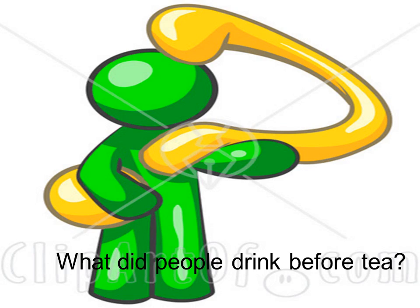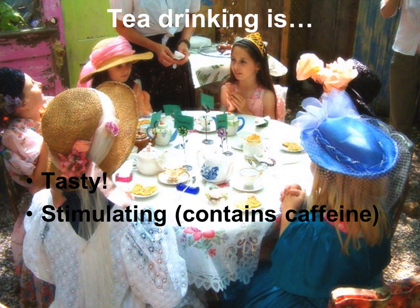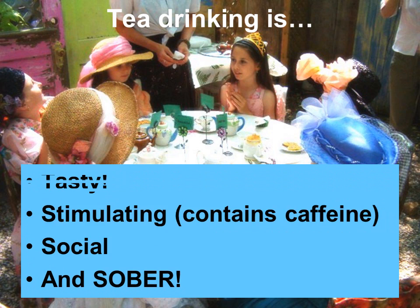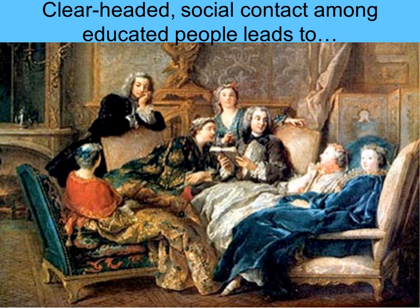Before ships brought tea to Europe, what did people drink? Alcoholic beverages — a lot of alcohol — because the fermentation process that makes beer and wine kills the germs and bacteria that would make you sick. In Europe during the Middle Ages and Dark Ages, before tea arrived, you had a lot of drunk people including young people. It wasn't because people thought being drunk was a good idea; it was because that was something you could drink that didn't kill you. There was also milk and soups, so I'm generalizing, but yes — a lot of alcohol was consumed before tea arrived. Tea is tasty, stimulating — it has caffeine — it's a social event, and it's sober.